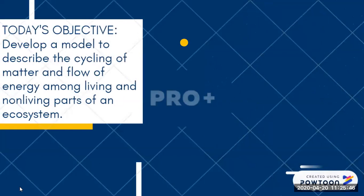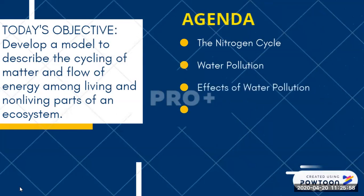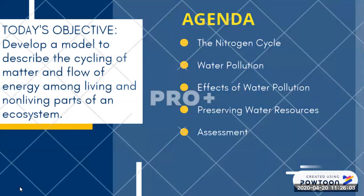So today's objective is to develop a model to describe the cycling of matter and flow of energy among living and nonliving parts of an ecosystem. We're going to do that with the nitrogen cycle. We're also going to learn about water pollution, the effects of water pollution, and preserving our water resources.